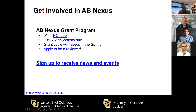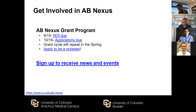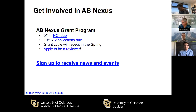I just wanted to make mention of how you can all get involved in the AB Nexus. We have the grant program that is coming up — the first cycle is this fall. September 14th we'll have a notice of intent due, which is just a short form to let us know you're planning to apply, describe who the team is, and provide a brief abstract of what your research project will entail. The full application, which is about four pages, is going to be due on October 16th.